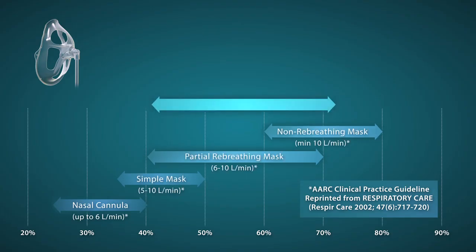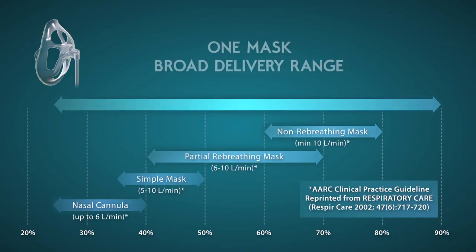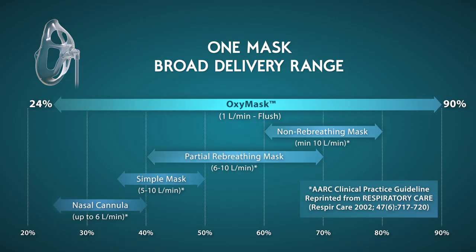With a broad range of oxygen FiO2 concentrations from 24 to 90 percent at flows ranging from 1 liter per minute to flush, OxyMask's open technology replaces traditional oxygen interfaces.